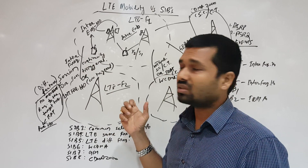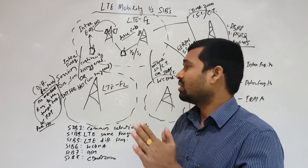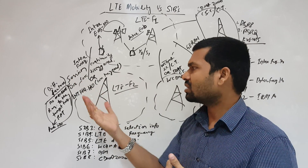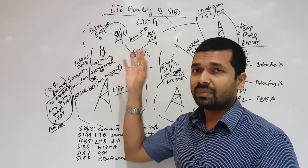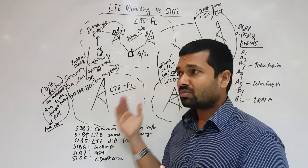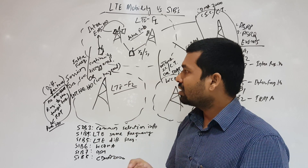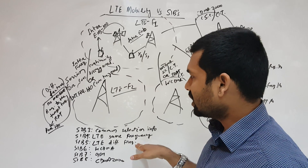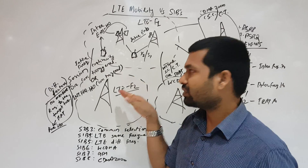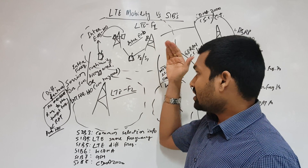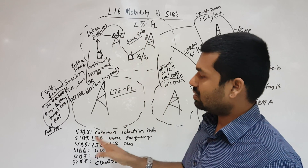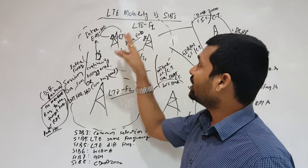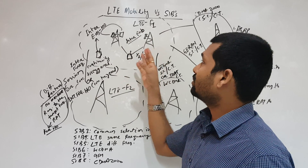Session continuity and coverage-triggered are additional features available to buy from vendors. Session continuity means we don't need to measure the target frequency or target cell — we can directly reselect immediately if coverage is really bad, without measuring the target cell or target IRAT frequency. This information is received from SIB-5, which provides LTE different-frequency information for handover or reselection. For LTE same-frequency within F1, we use SIB-4, which gives inter-frequency neighbor information. SIB-3 provides common cell selection and reselection parameters.